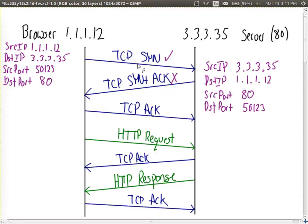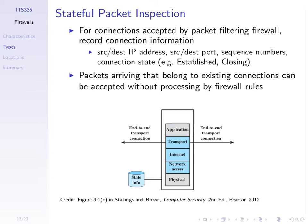Let's see how SPI — stateful packet inspection — works. It makes setting up the firewall much easier. Because we are dealing with TCP connections, we know TCP always starts with SYN, SYN-ACK, ACK, then data — a typical flow. Rather than the administrator having to create rules to allow all of those packets, the administrator creates one rule to allow the first packet, and then the SPI component of the firewall allows subsequent packets. So it keeps track of the connections which have been accepted.